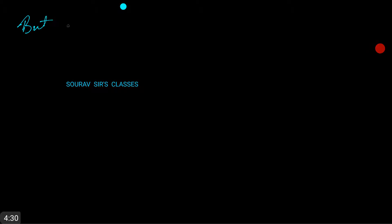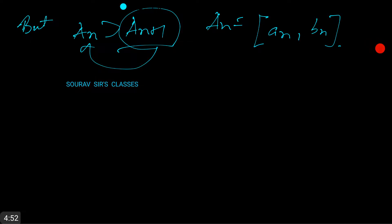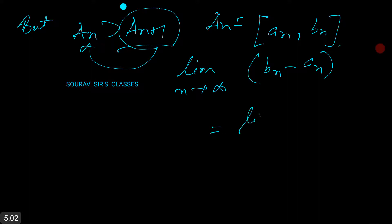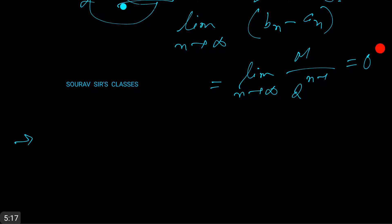We have A_{n+1} ⊆ A_n, and if A_n = [a_n, b_n], then the limit as n tends to infinity of (b_n − a_n) equals the limit of M/2^(n−1), which equals 0.